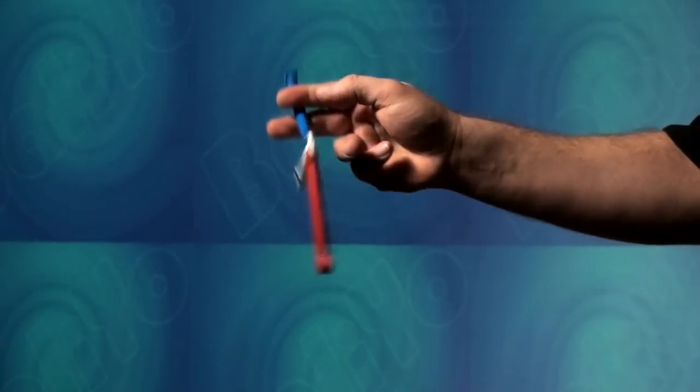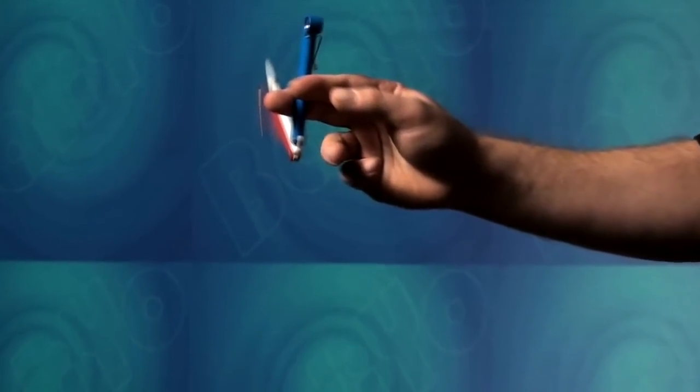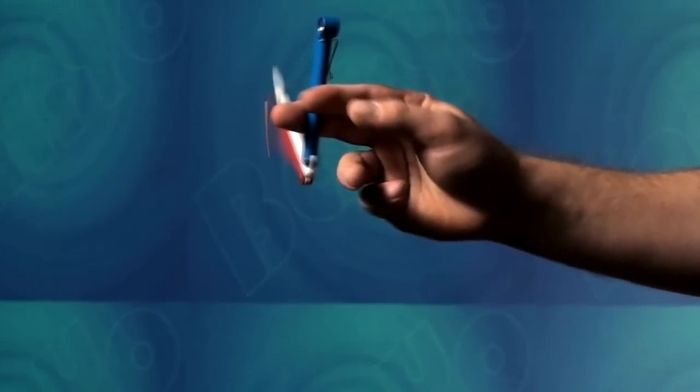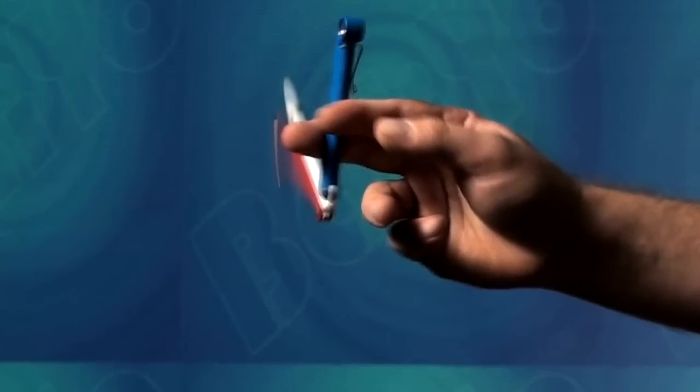Turn your hand palm down to swing the pen body and the red handle downward. Their momentum will continue and cause them both to swing up to strike your middle finger.